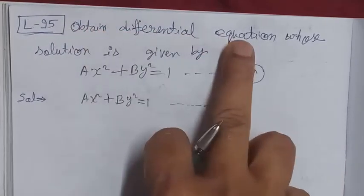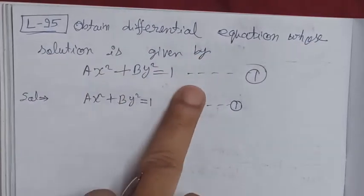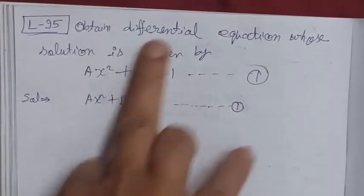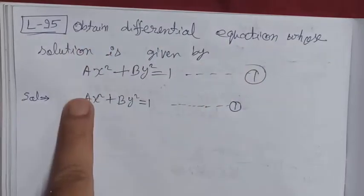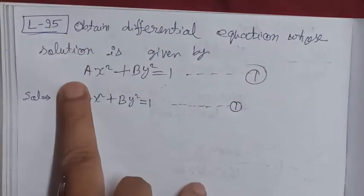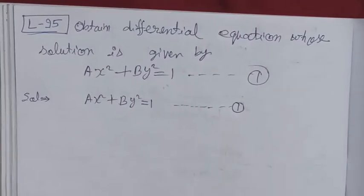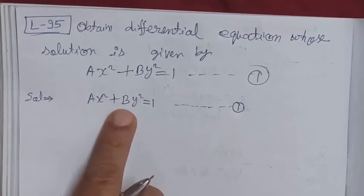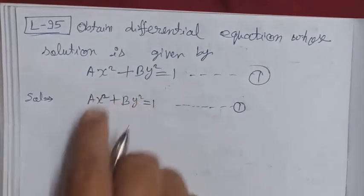The problem is: obtain the differential equation whose solution is given by ax² + by² = 1. This is equation number one. We need to form the differential equation. Looking at the solution, we can see there are two arbitrary constants, a and b.